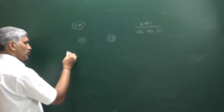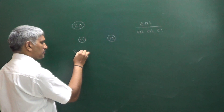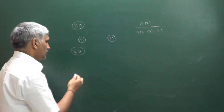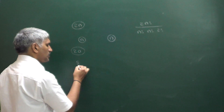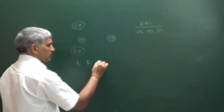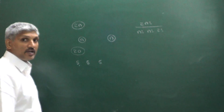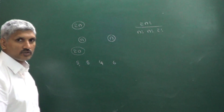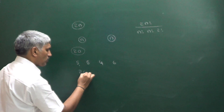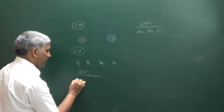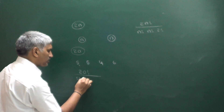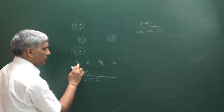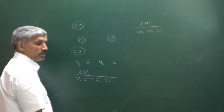Now consider another example. Total 20 items are there. We have to divide into 4 groups: 1st group containing 5 items, 2nd group containing 5 items, 3rd group containing 4 items, and 4th group containing 6 items.